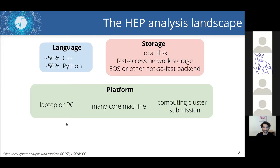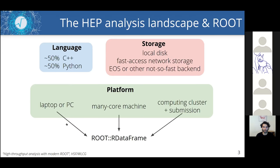Users can easily lose performance because they might not know what's the right tool for their situation. They may have to adapt their programming model and use different APIs depending on which combination of language, storage, or platform they need. In ROOT, we are trying to take all of this away with a single entry point for all analyses that rely on these resources.